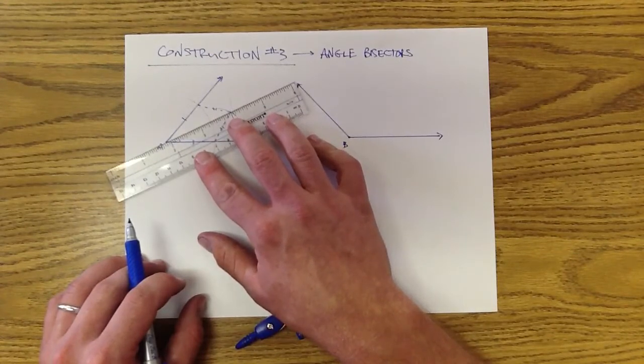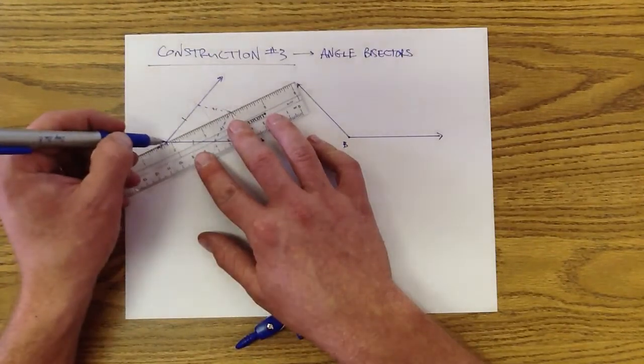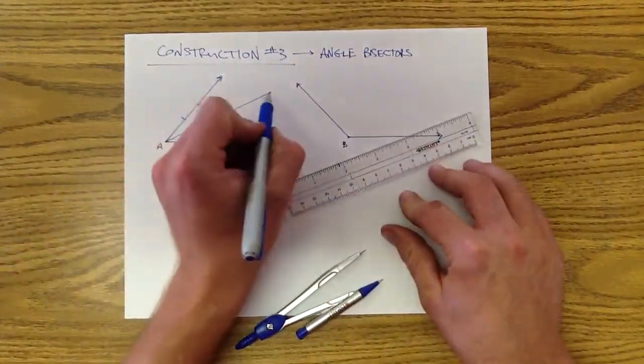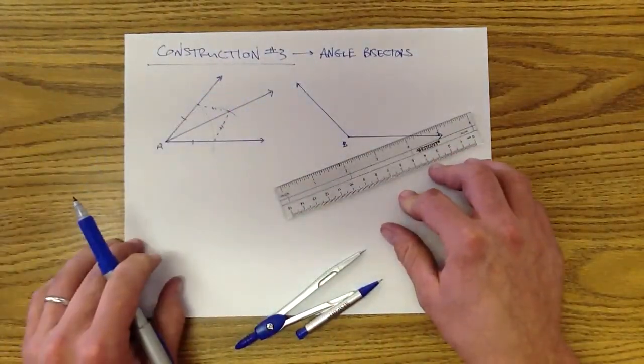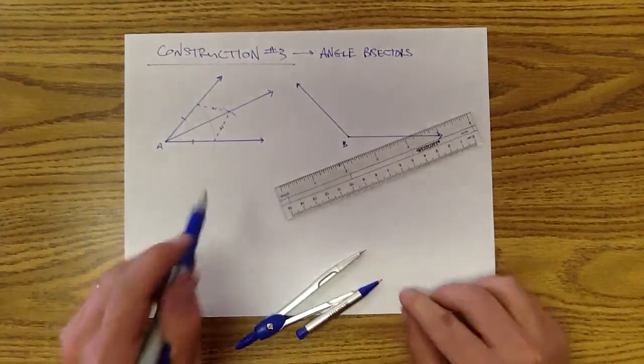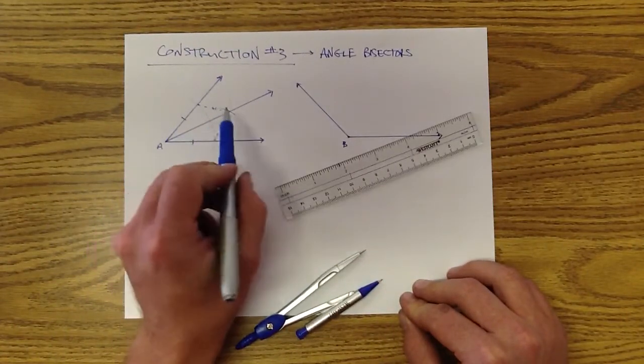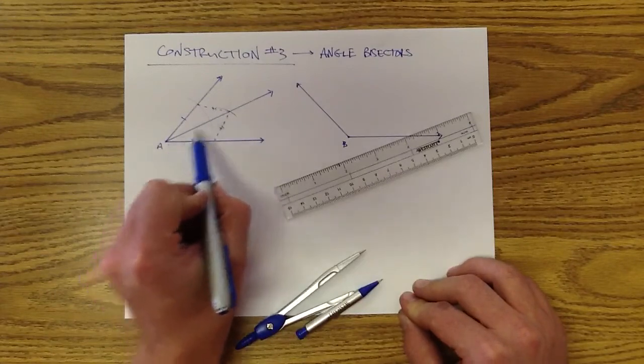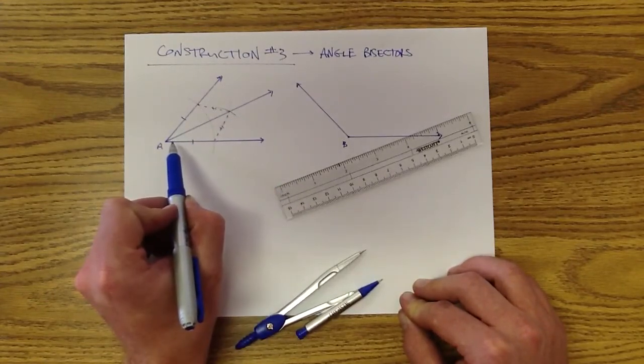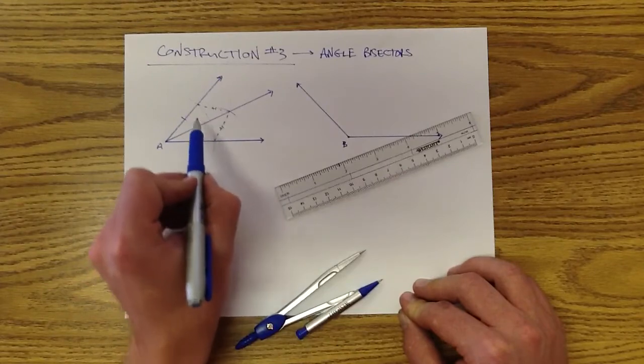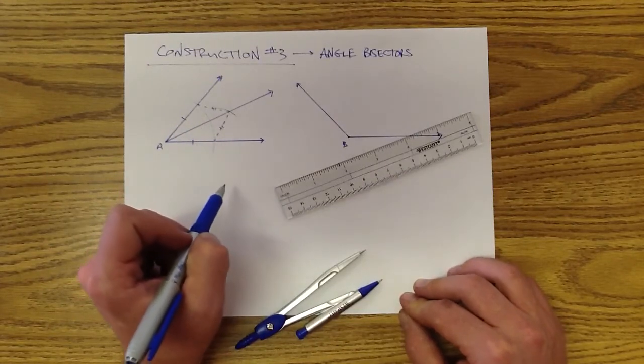So now when we draw a ray from point A through that intersection point, we've got what is going to be our angle bisector. And this is the reason why it's an angle bisector. We have sides that are congruent here, sides that are congruent there, and this side is congruent to itself by the reflexive property. So we have two congruent triangles again created here by our construction.